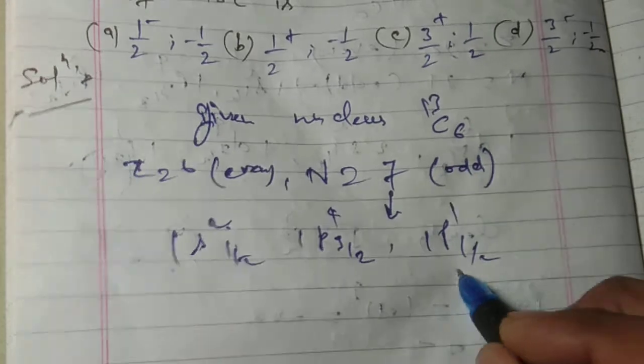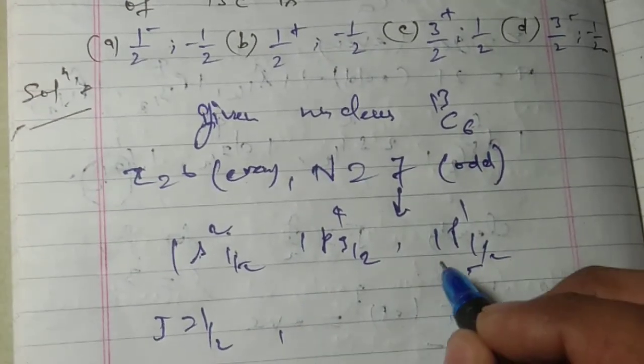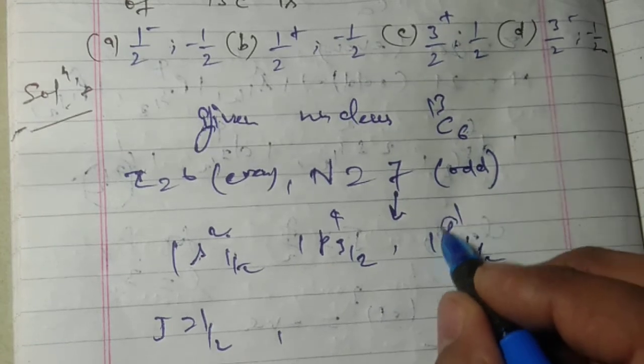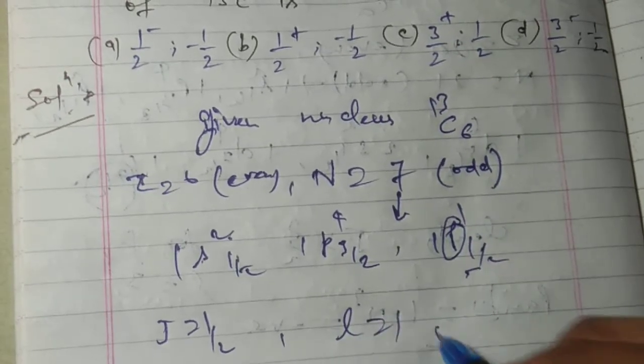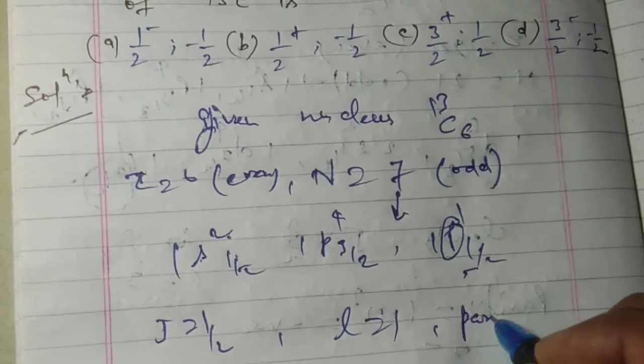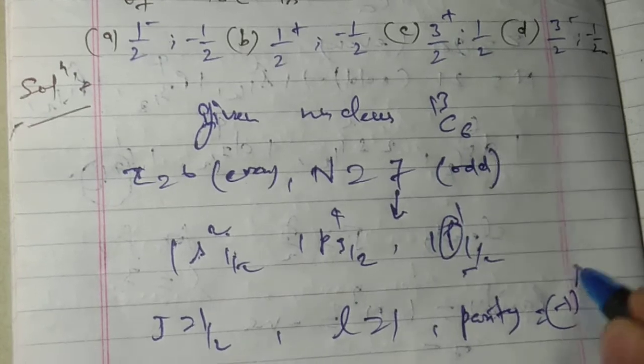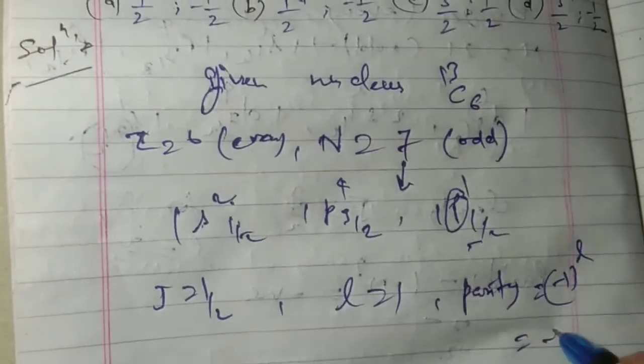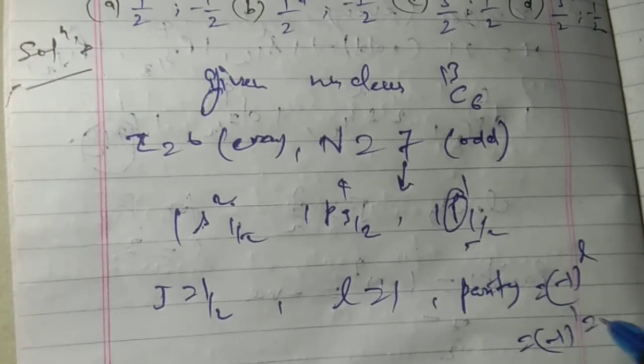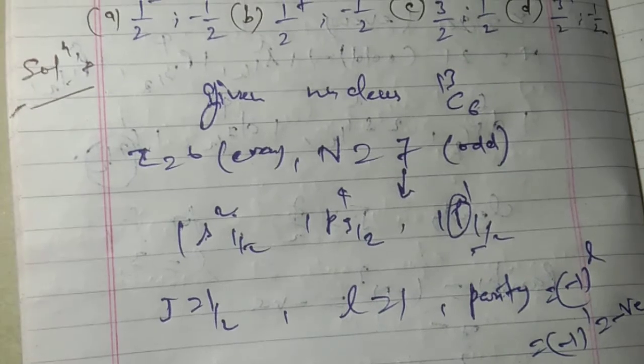So clearly J = 1/2, and for p orbital, L = 1. So the parity equals (-1)^L, that is (-1)^1, which is negative.